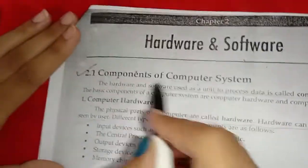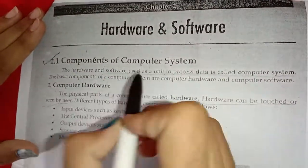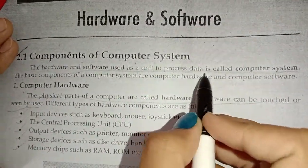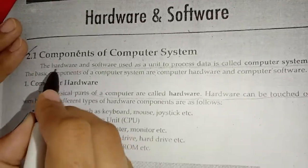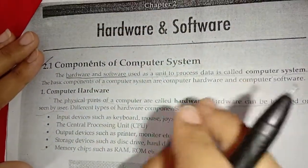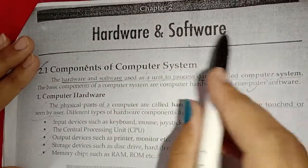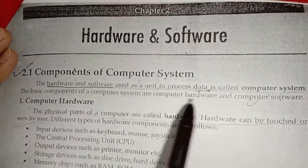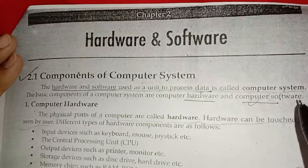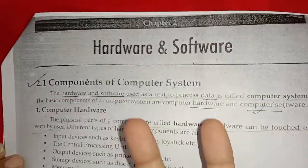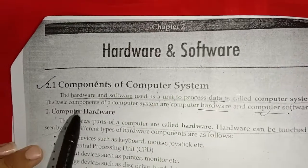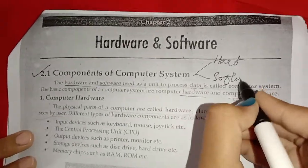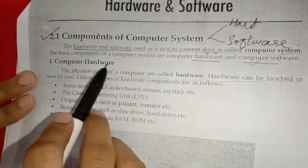What is the component of the computer system? A computer system is called hardware and software used as a unit to process data. When hardware and software both work together and process data, that entire system is called a computer system. The two basic components of the computer system are hardware and software.